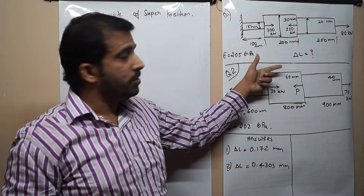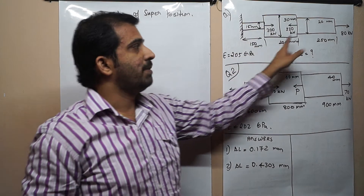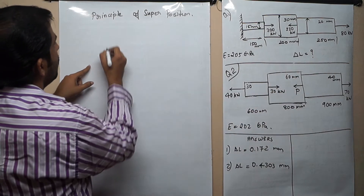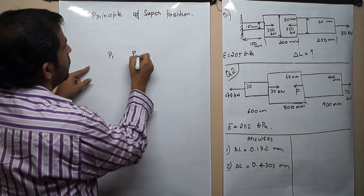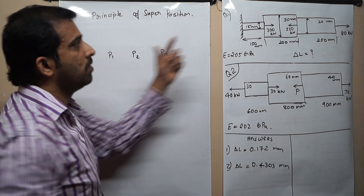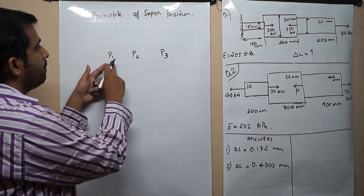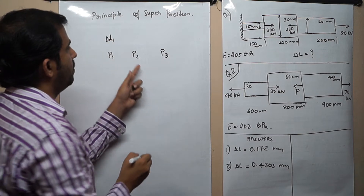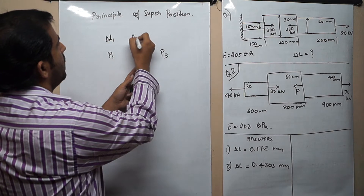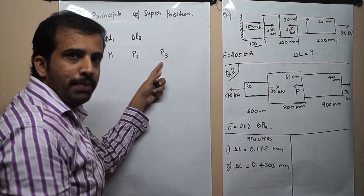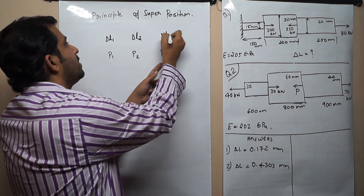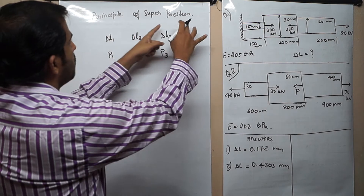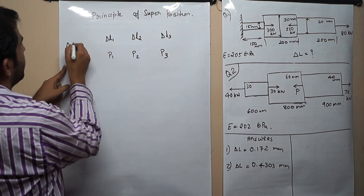If forces P1, P2, P3 are acting on this body, from P1 there will be an elongation delta L1, from P2 there will be delta L2, and from P3 there will be delta L3. According to the principle of superposition, the net effect delta L will be equal to delta L1 plus delta L2 plus delta L3.